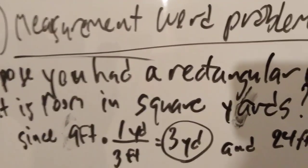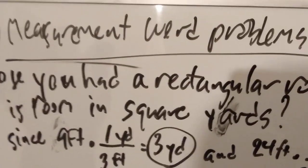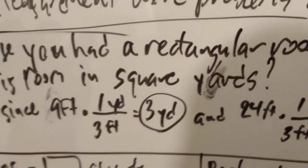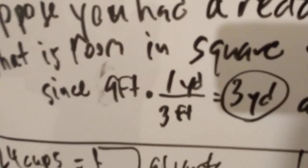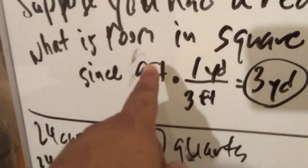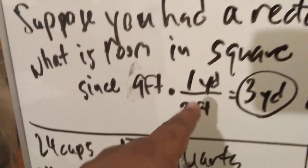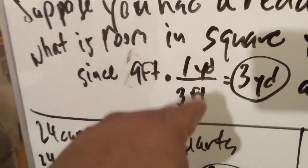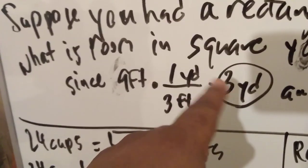That means you got to convert using conversion factors for both of these. So 9 feet, and we know that 3 feet is 1 yard. Feet gotta cancel, so 9 divided by 3 is 3. You can put this in here, and then 9 divided by 3 is 3, and then your feet cancel and you got yards. So 9 feet is 3 yards.